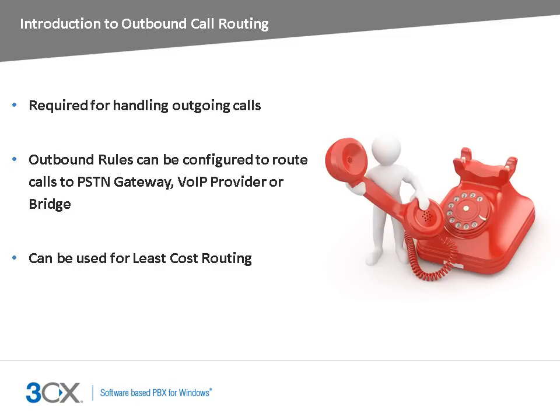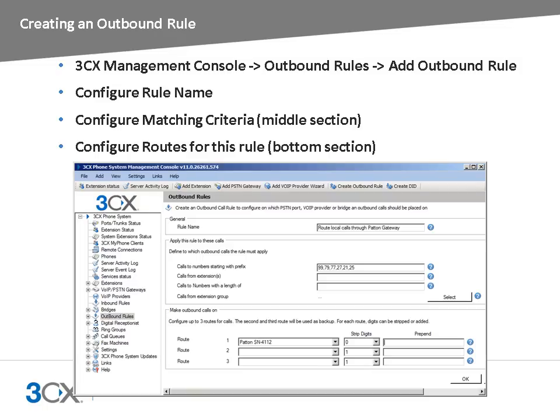Outbound rules can also be used to perform least cost routing. This means that the PBX will automatically choose to make a call on a line which incurs the least cost. Let's proceed to configure an outbound rule. You can create new outbound rules from the 3CX Management Console's Outbound Rules node. Click on the Add Outbound Rule button and configure the name of the new rule.